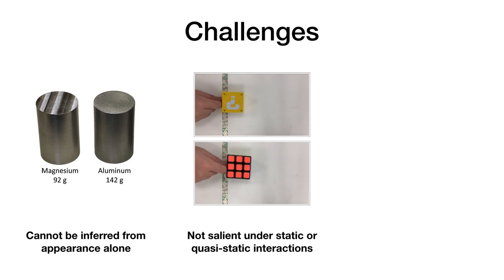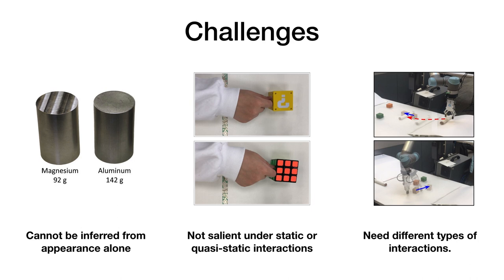For example, in static environments, most physical properties cannot be directly inferred from appearance cues alone. Even under static or quasi-static interactions like pushing, these properties can be difficult to observe without accurate force torque sensing.